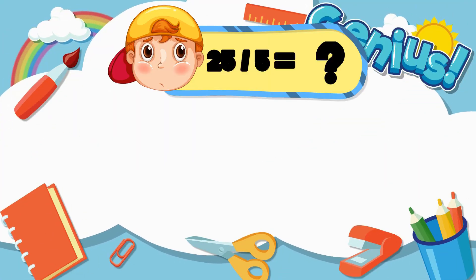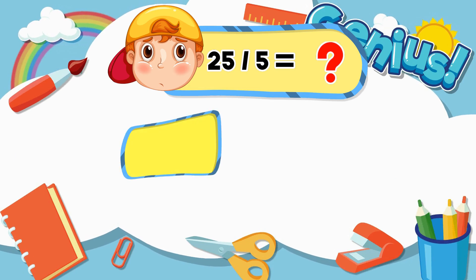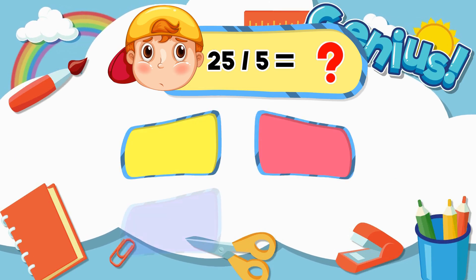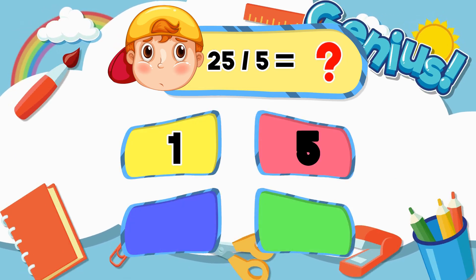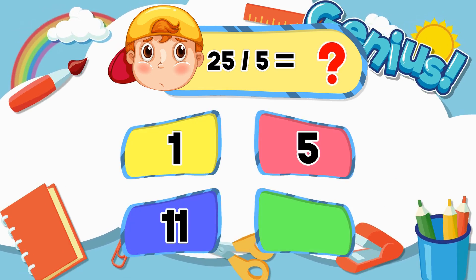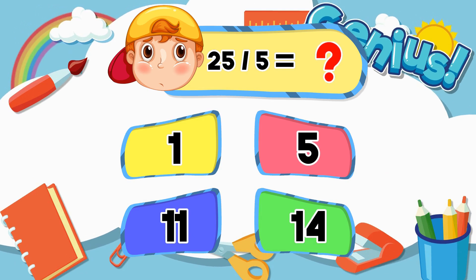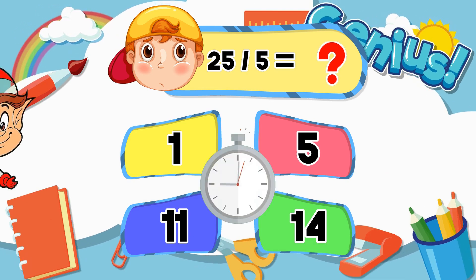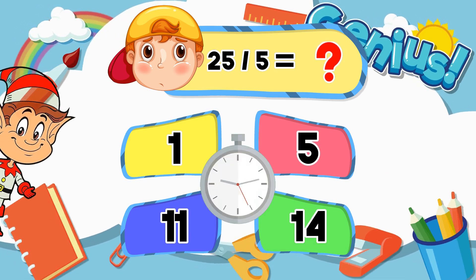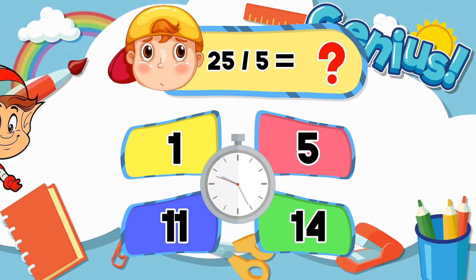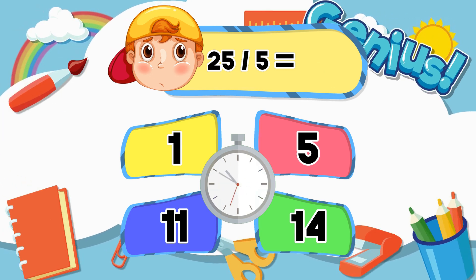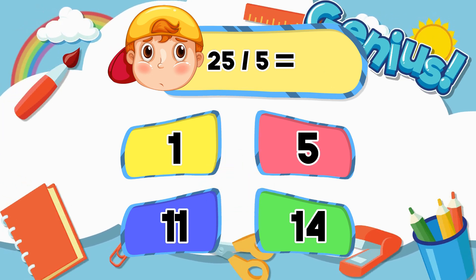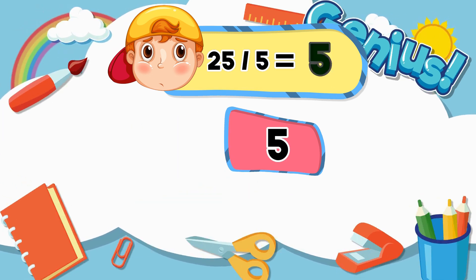What is 25 divided by 5? Options: 1, 5, 11, 14. Answer: 5.